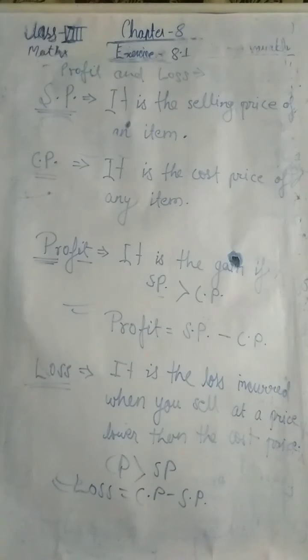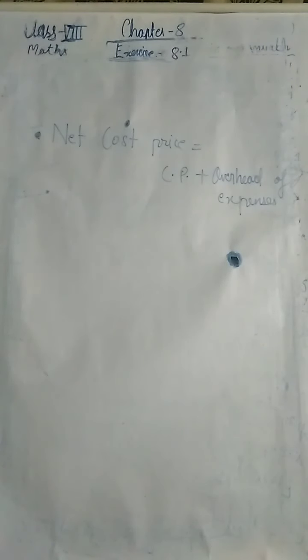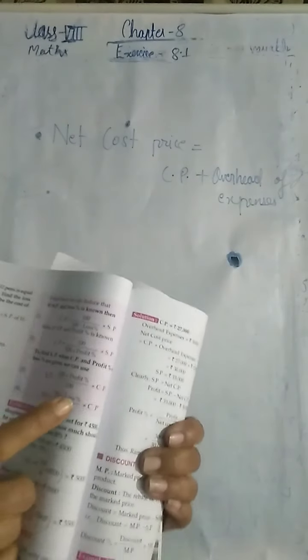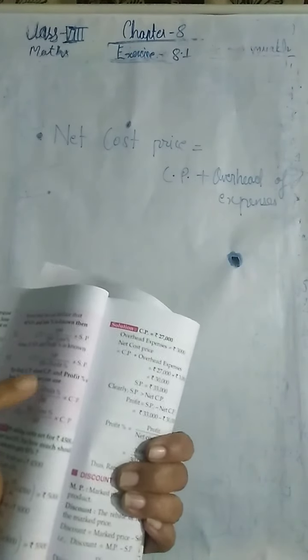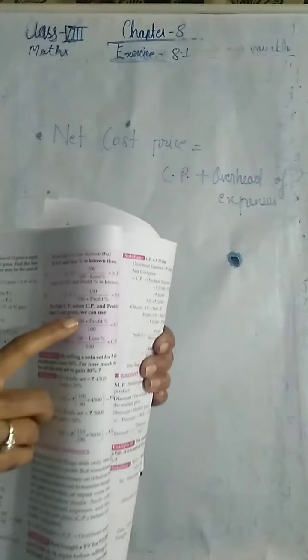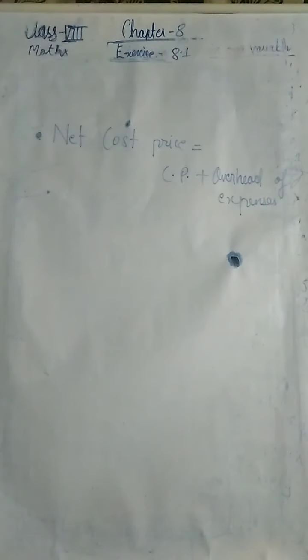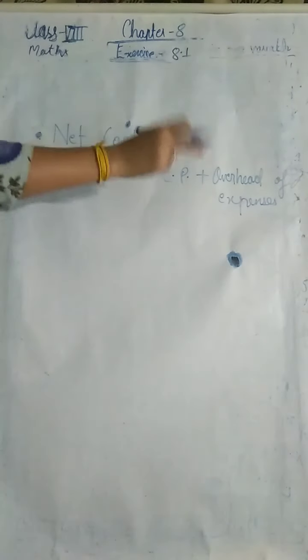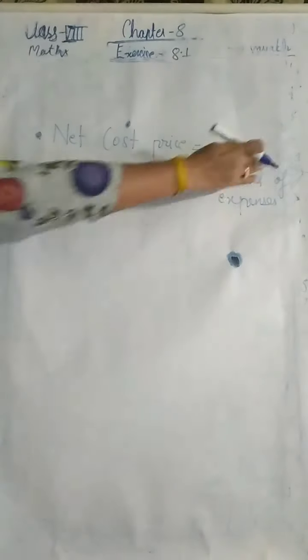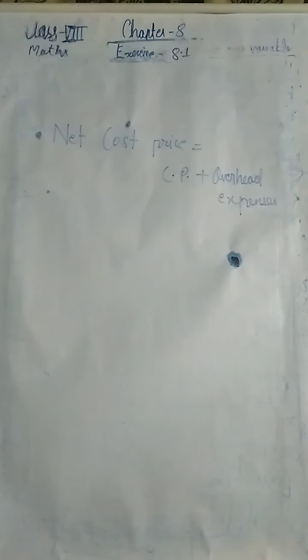Overhead expenses: net cost price is equal to CP plus overhead expenses. Net cost price means the actual total amount you paid for the item including all extra costs.